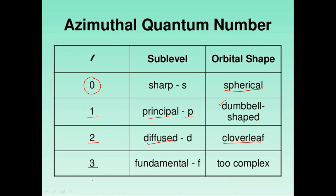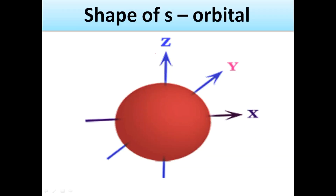The shape of the s orbital is spherical. The electron can be considered present anywhere in any portion of the s orbital because it is spherical in nature — it can be here, or here, or here. We cannot identify the exact region of the electron in s because the s orbital has no nodal plane, which is something that appears in the p orbital. So the shape of the s orbital is spherical.